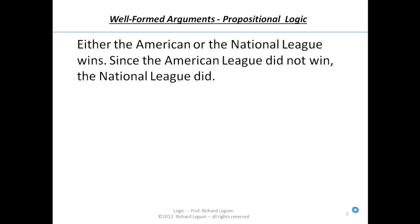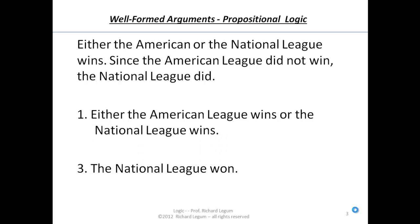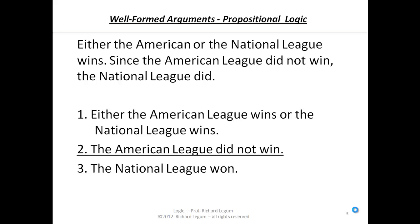Let's take a look at that first argument we considered at the beginning. Either the American or the National League wins. Since the American League did not win, the National League did. Our first step is always to reconstruct the argument in standard form. The conclusion is obviously the National League won. Two premises: either the American League wins or the National League wins; the American League did not win; therefore the National League wins.